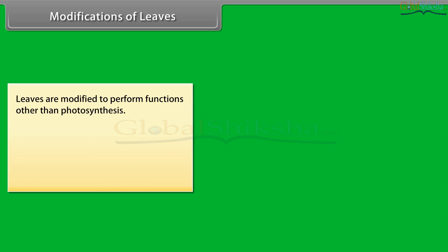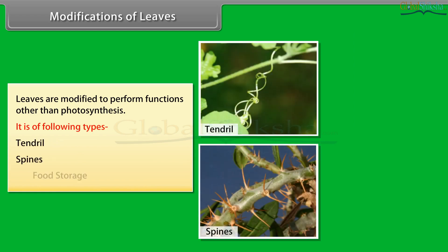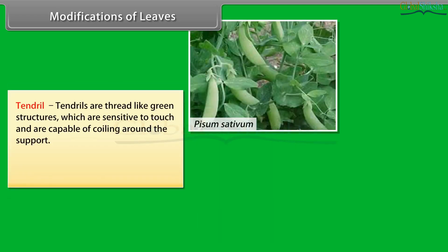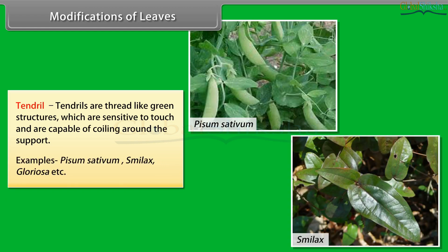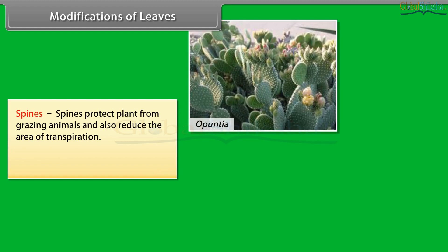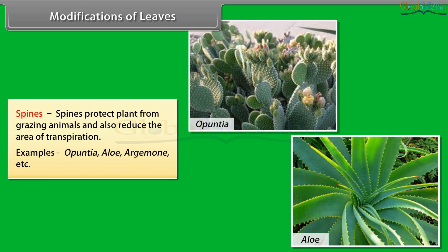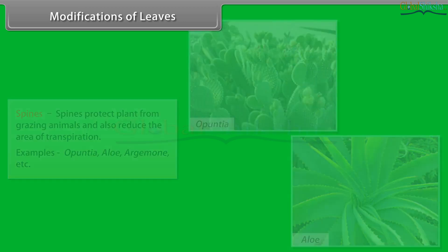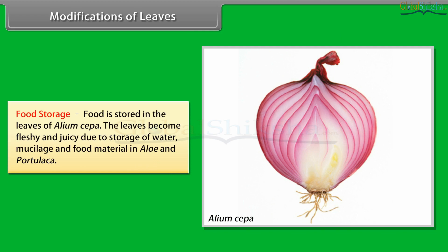Leaves are modified to perform functions other than photosynthesis, and it is of the following types: tendrils, spines, and food storage. Tendrils are thread-like green structures which are sensitive to touch and capable of coiling around a support — examples: Pisum sativum, Smilax, Gloriosa. Spines protect the plant from grazing animals and also reduce the area of transpiration — examples: Opuntia, Aloe, Agave. Food is stored in the leaves of Allium cepa; the leaves become fleshy and juicy due to storage of water, mucilage and food material in Aloe and Portulaca.